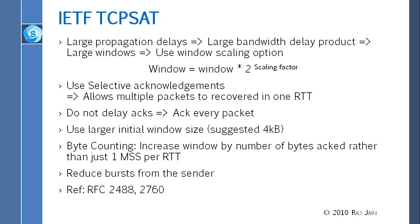Fourth, use a large initial window — don't start from one. Because if you need to get to the right window size for satellite, networks might need a window size of 15,000 MSS, 15,000 segments. If you start from one, go to two, go to four, it will take 32 or more round trips before you get there. And each round trip is a quarter to half a second on satellite. So you really don't want to start from one — this is where that rule of dropping to one fails.